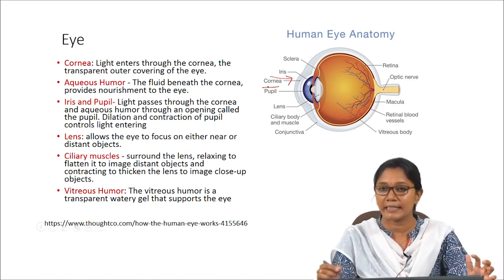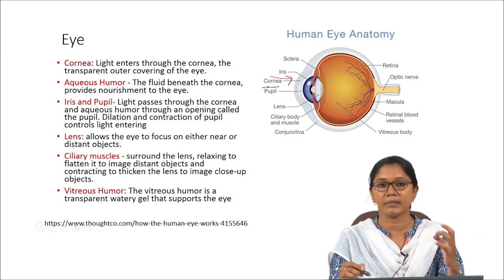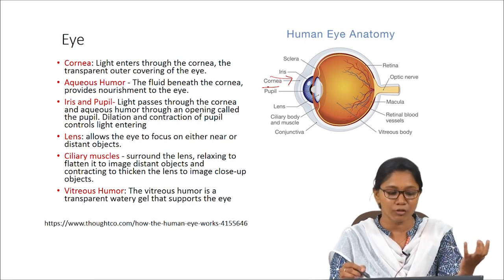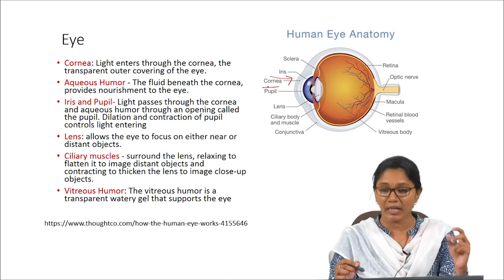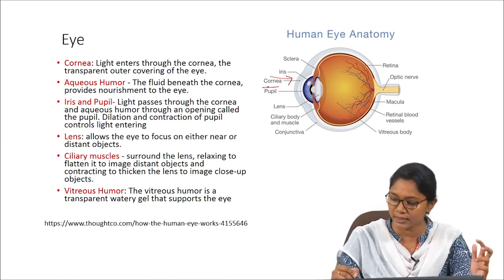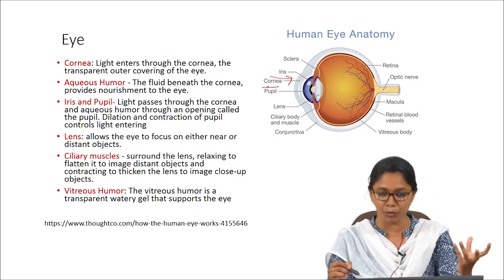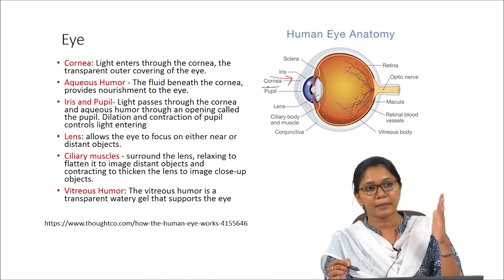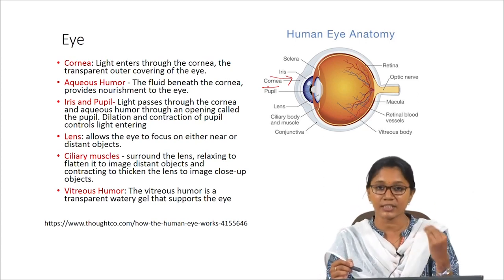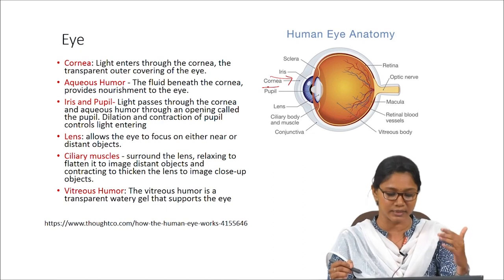The cornea is the outermost layer of the eye. This is where the light enters, and transparency is the major strength of the corneal layer. Then we have the aqueous humor, the fluid behind the cornea that provides nourishment to the eye. Then we have the iris and the pupil — the light that passes through the cornea reaches the iris and the pupil, where dilation and contraction help you see near and distant objects.